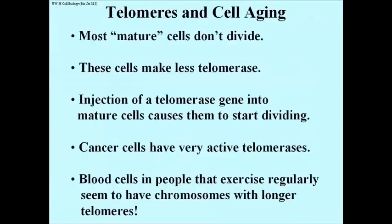A remarkable discovery was made some years ago. Cells that have stopped dividing contain less telomerase than cells that are still active. But if you inject telomerase particles — these ribonucleoprotein particles isolated from healthy cells — into cells that have stopped dividing, the cells start dividing again. Cancer cells, in contrast, have active telomerases that don't quit, which perhaps begins to explain why cancer cells can divide out of control.